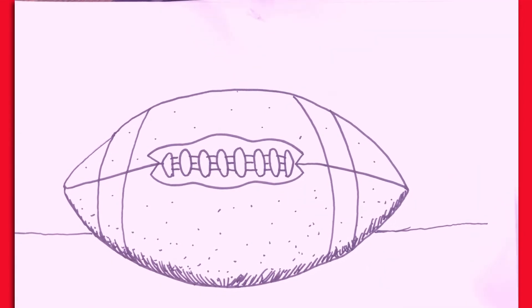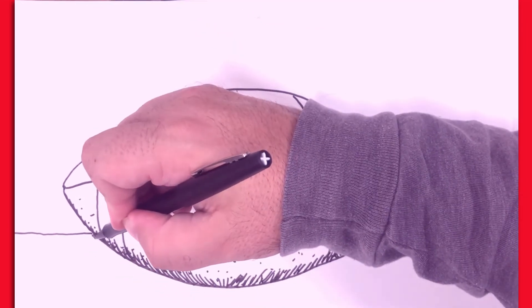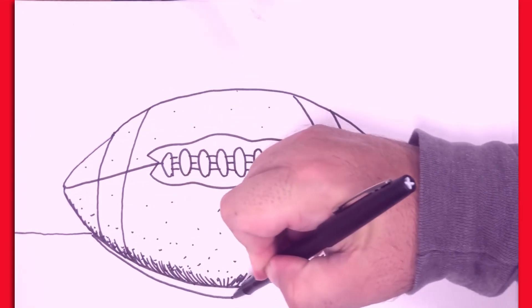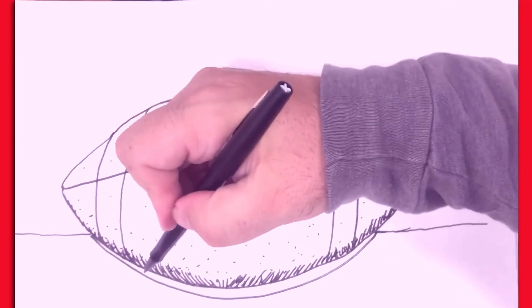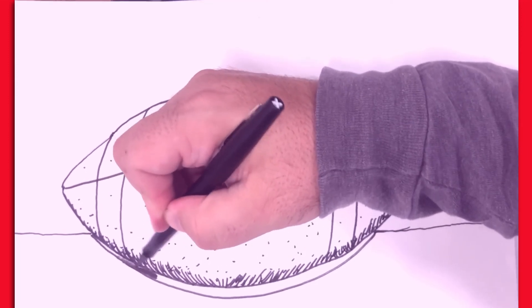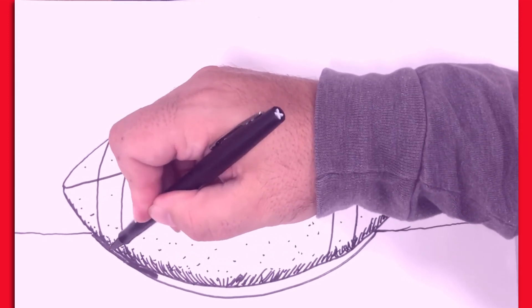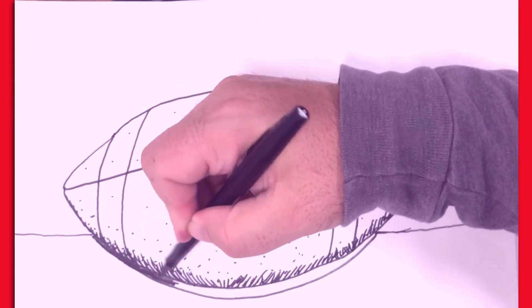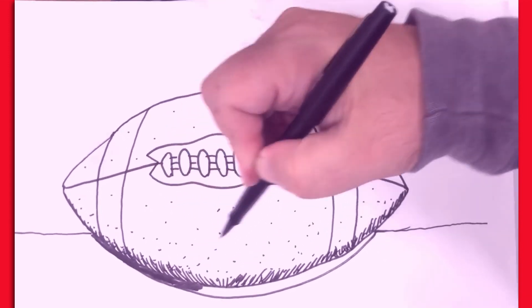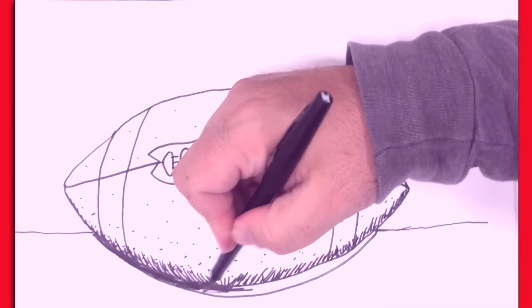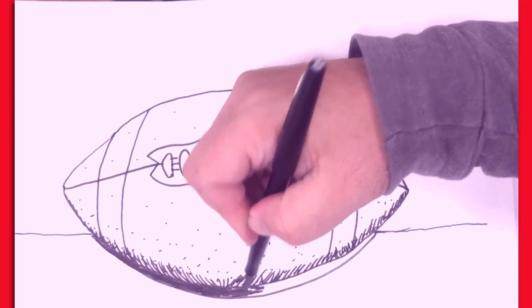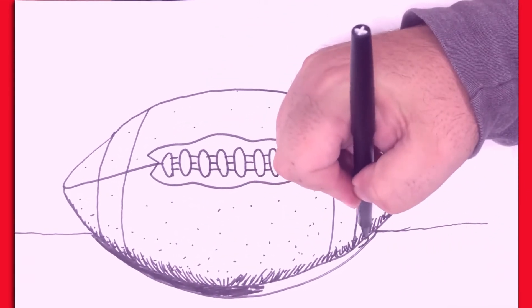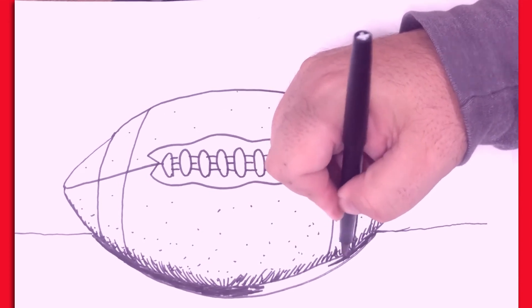And now for some shadow. So right underneath here, draw a line like this, where it's sitting on the grass. And I'm just going to color that in. All the way across.